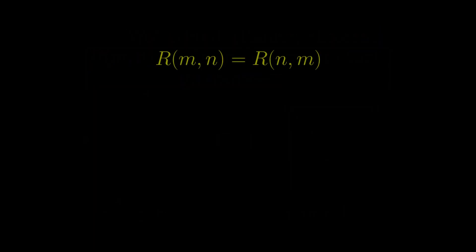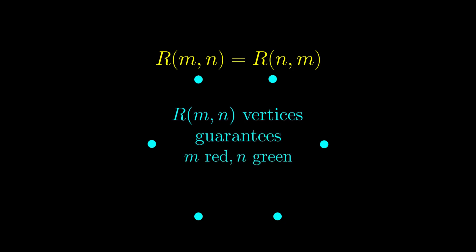Before we prove this, we observe that if r(m,n) exists, then swapping m and n does not change the value of r(m,n). This is true because let's say there is r(m,n) vertices in a graph. No matter what I do, it still guarantees m vertices linking with red edges, or n vertices with green edges.